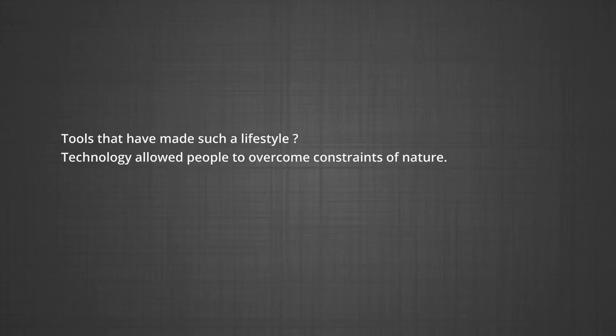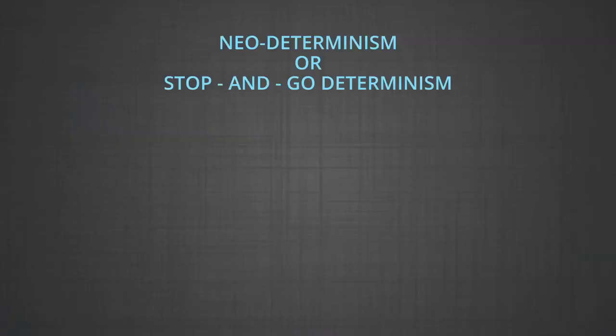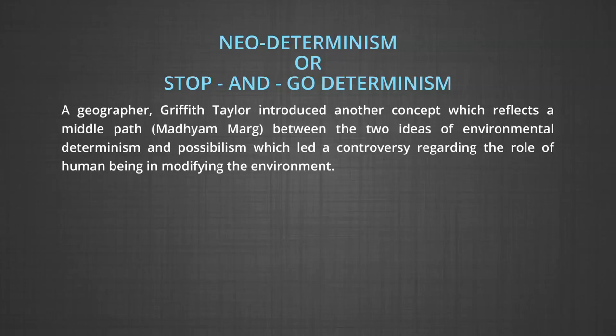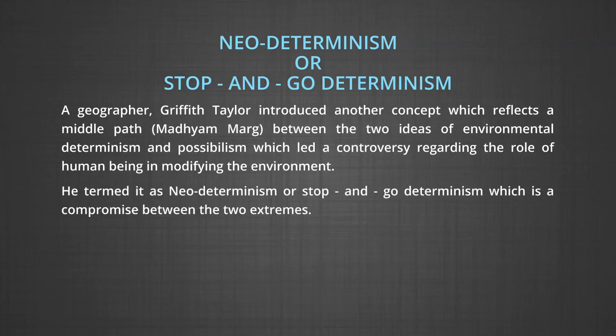and others to overcome the constraints imposed by nature. Thomas Griffith Taylor, a geographer, anthropologist, and explorer, introduced another concept which reflects a middle path — what we call Madhyam Marg in Buddhism — between the two ideas of environmental determinism and possibilism. He termed it neo-determinism, or stop and go determinism, which is a compromise between the two extremes.